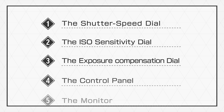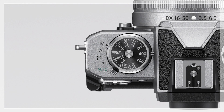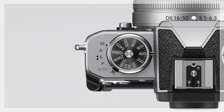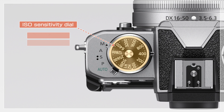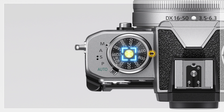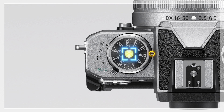Next, let's take a look at the ISO sensitivity dial. ISO sensitivity can be adjusted in modes P, S, A, and M. To choose an ISO sensitivity, hold the ISO sensitivity dial lock release and rotate the ISO sensitivity dial. High values allow faster shutter speeds that can be effective when lighting is poor or your subject is in motion. Choose lower values if you notice that your pictures are affected by image artifacts.